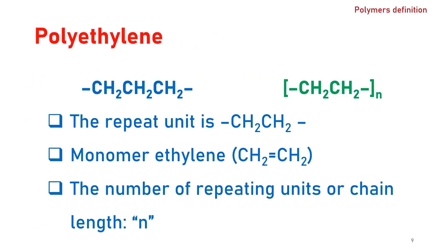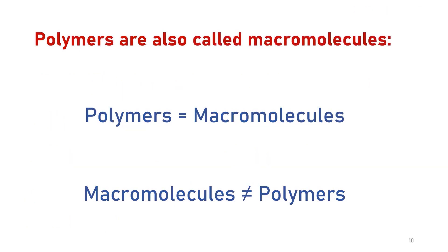For example, polyethylene is a polymer made from the repeating units of ethylene monomers. Polymers are also called macromolecules due to their large size and high molecular weight. All polymers are considered to be macromolecules, but not all macromolecules are considered to be polymers.